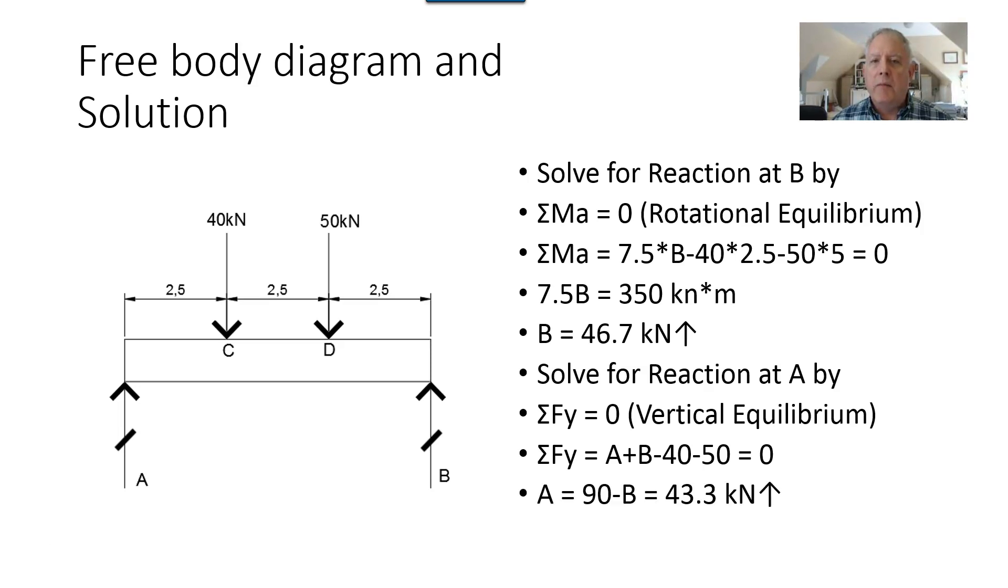Now we already know what B is. So A is equal to 90, which is the sum of 40 and 50 minus B or 43.3 kilonewtons.